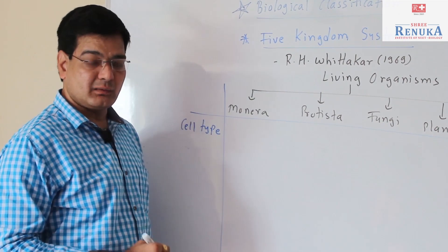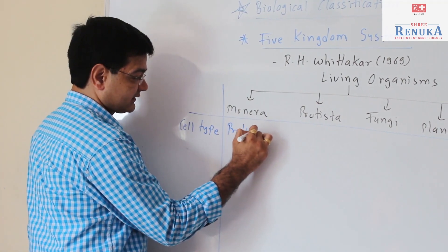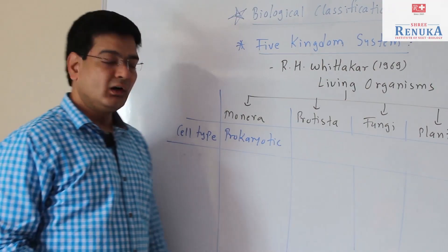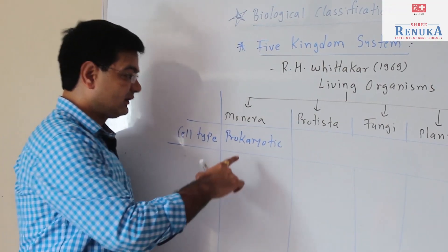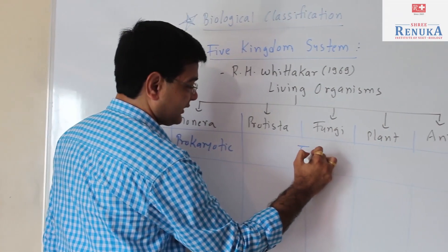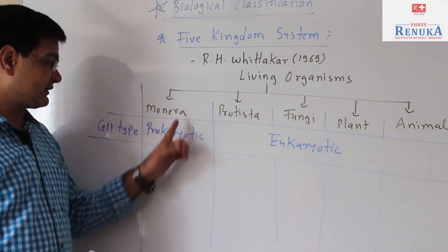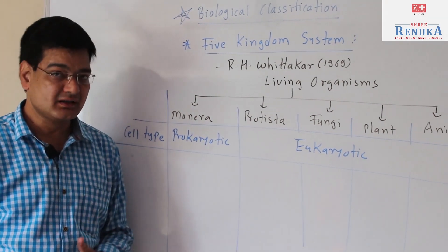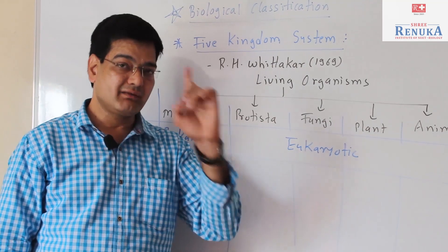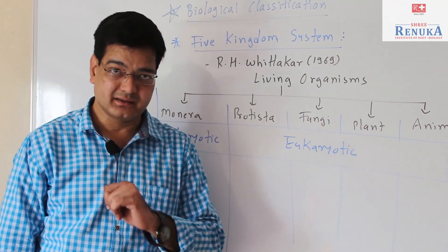Whittaker gave some criteria for classification. If we talk about Monera, they are prokaryotic organisms, but all other organisms except Monera are eukaryotic. Prokaryotic organisms have a primitive kind of nucleus, whereas in eukaryotic organisms, a well-developed nucleus is found — meaning it has a nuclear membrane.